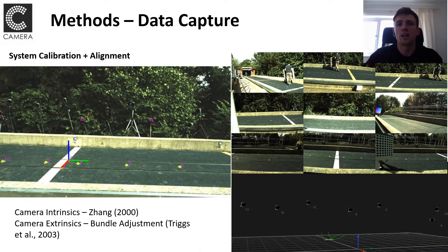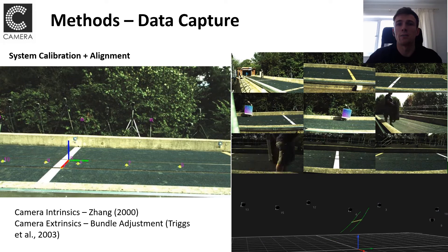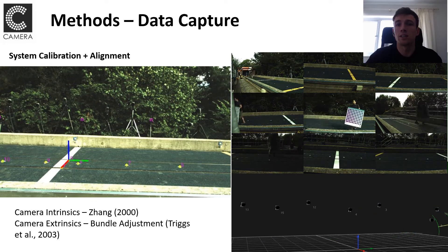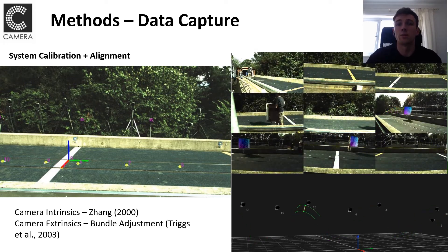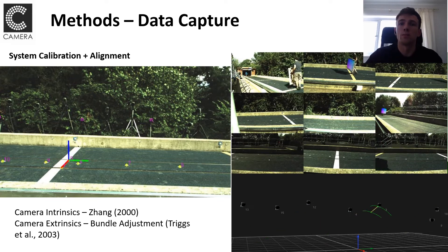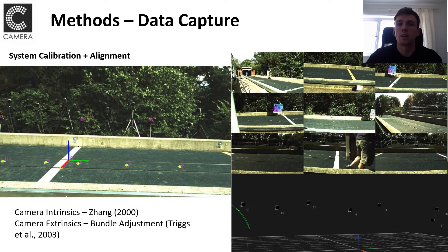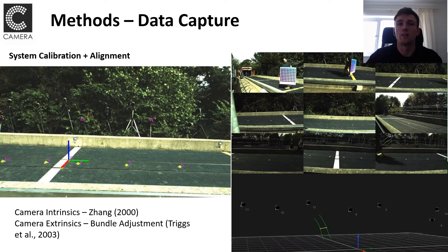The Qualisys system was calibrated using the standard wand calibration as per the manufacturer's recommendations. The machine vision cameras were calibrated using a binary dot matrix, which allowed for the calculation of each camera's intrinsics, and the camera extrinsics were computed using a bundle adjustment algorithm. Both systems' Euclidean spaces were aligned by tracking the Qualisys L-frame, as shown in the left hand image.